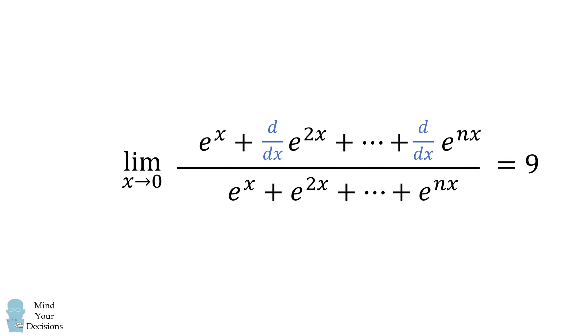We can then take the derivative of each of these exponential functions. The derivative of e to the x is equal to e to the power of x. The derivative with respect to x of e to the power of 2x is equal to 2 times e to the power of 2x. And the final term, derivative of e to the power of n multiplied by x with respect to x, is equal to n multiplied by e to the power of n times x.